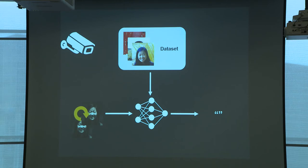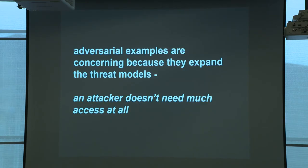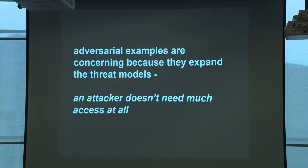Adversarial examples are important because they expand the set of threat models we need to be concerned with. An attacker doesn't need access to the data, algorithms, model, or server — all they need to do is modify the input. Given that threat model, it's very hard to know what to do: in normal security we have practices to defend servers, but what do we do when we can't restrict people's access to inputs to the classifier? In these cases, we need to start thinking about defenses from the machine learning theory perspective.